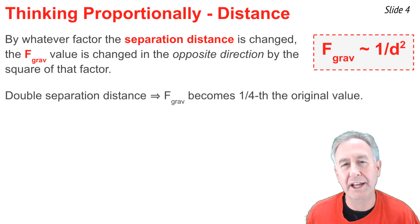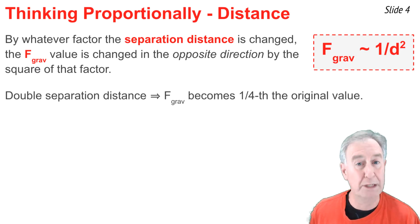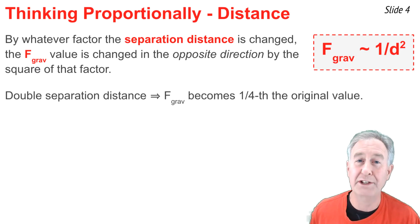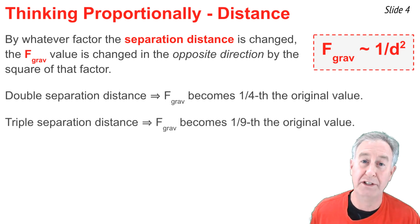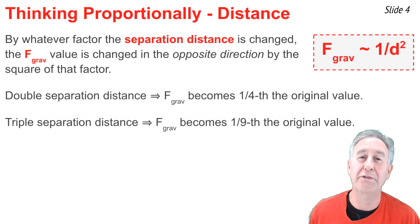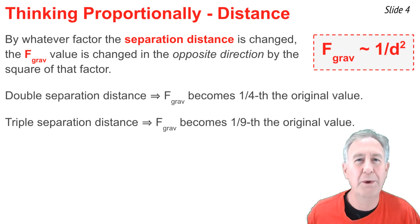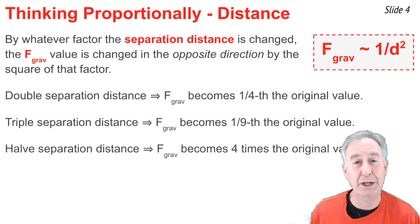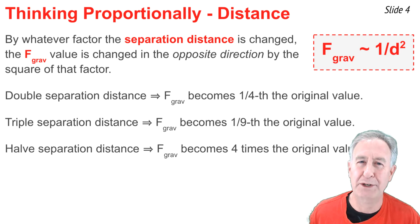For example, if we were to double the separation distance, making it two times larger, then we would cause the F-grav value to be smaller by a factor of two squared — that is, one-fourth of the original value. If we were to triple the separation distance, the F-grav would be one-ninth of the original value. And if we were to half the separation distance, making it two times smaller, then we'd make the F-grav four times larger — two squared times larger.